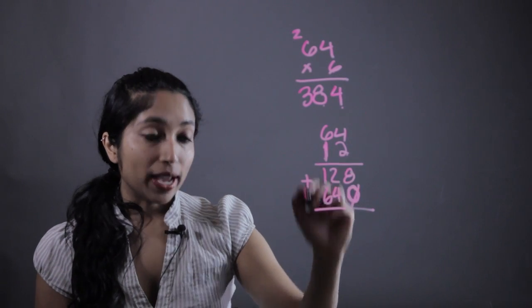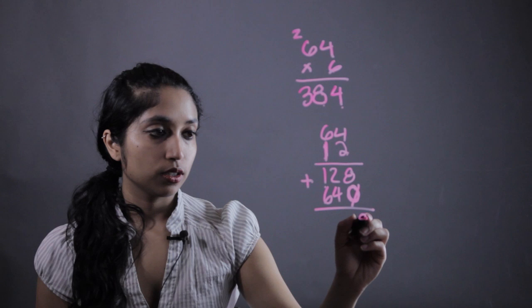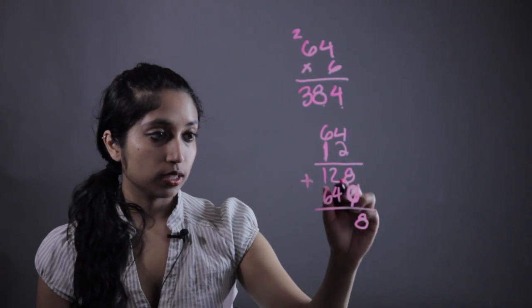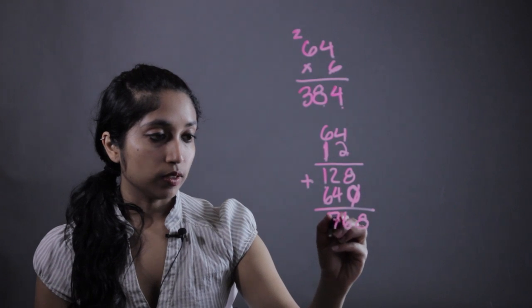Finally, you add everything together. 8 plus 0 is 8, 2 plus 4 is 6, 1 plus 6 is 7.